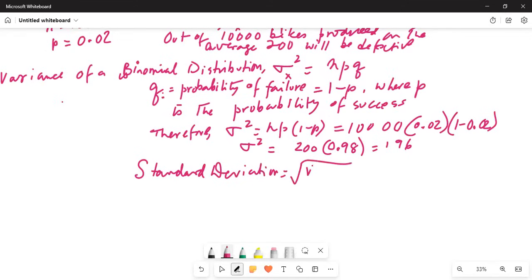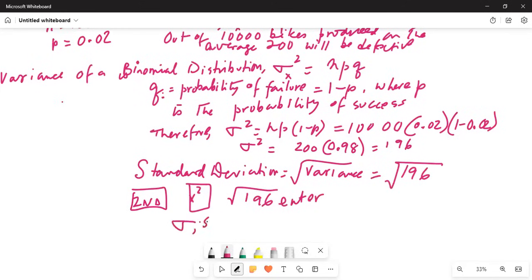Standard deviation is square root of, in this case, 196. In our calculator, we can press the second button, then x square, which gives me the square root. Inside the square root, I type 196 and enter. σ, which is the standard deviation, is equal to 2nd x square, gives me the square root, and then 196 should be 14.